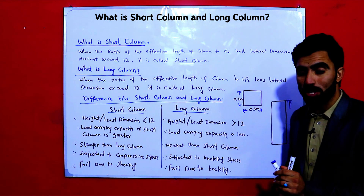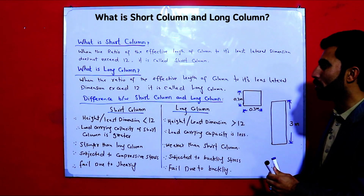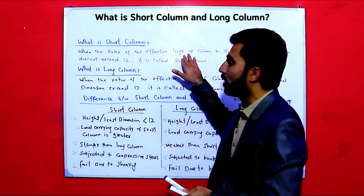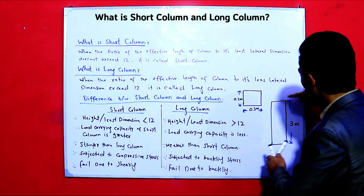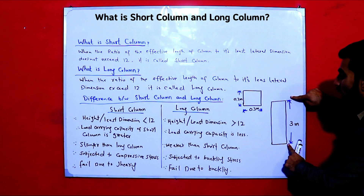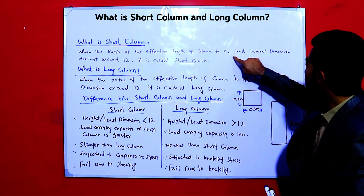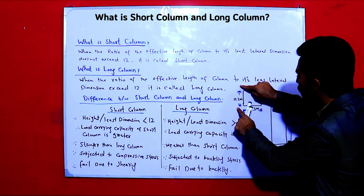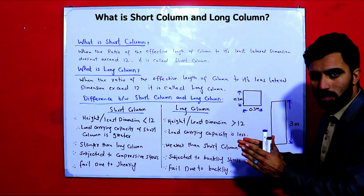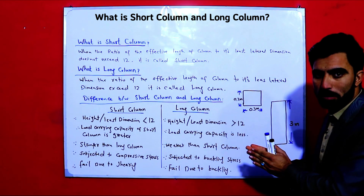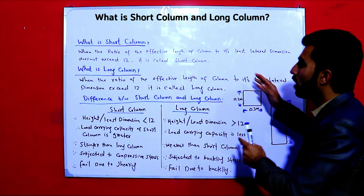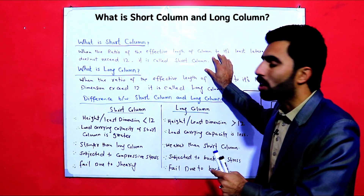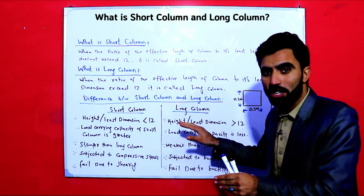This is the key topic. First, I will discuss the definition: when the ratio of the effective length — or height — of the column to its least lateral dimension does not exceed 12, it is called a short column. The least lateral dimension means the smaller of the two cross-sectional dimensions. This is the simple definition.